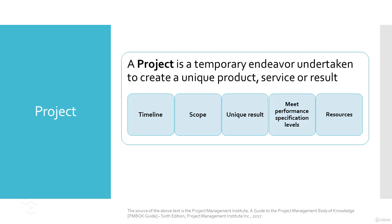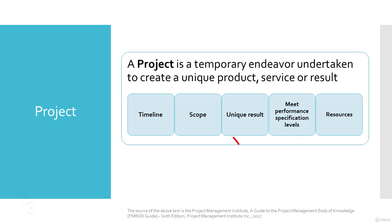For a project, please remember that it has to be a temporary one and it has to have a timeline. Also, every project needs and makes use of resources for carrying out the project work. Every project will have a definition of product or service, and it refers to quality standards. And from the definition, please remember that every project has to create a unique product, service, or result, meaning that every project will have a unique outcome.